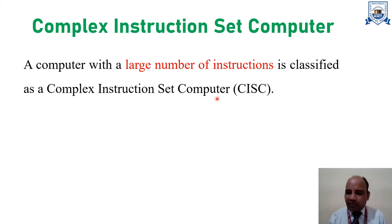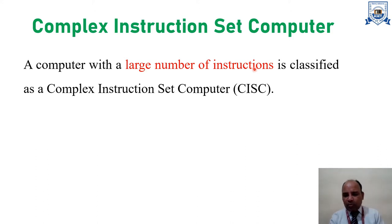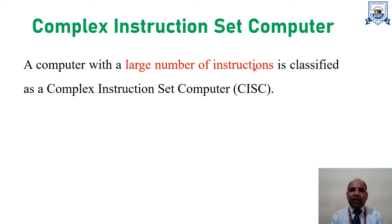There are different kinds of instructions we have already covered: arithmetic instructions, logical instructions, movement instructions — whether from memory to CPU, CPU to memory, IO to memory, or memory to IO — and also control instructions. In summary, a computer performs many different categories of instructions to achieve the desired result.